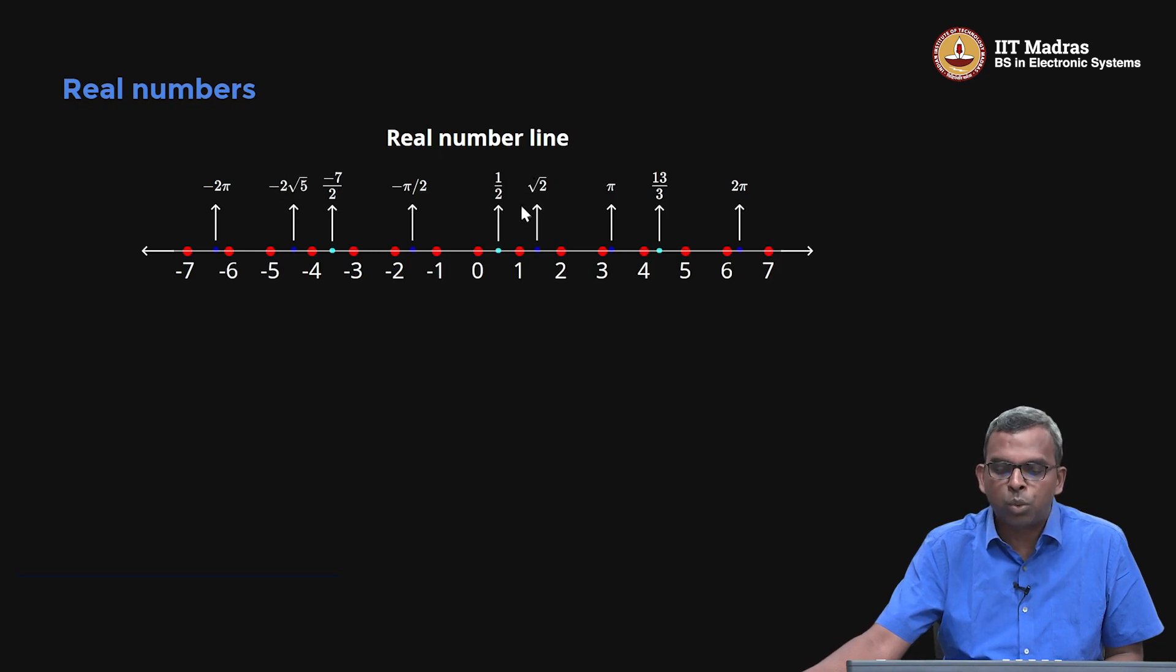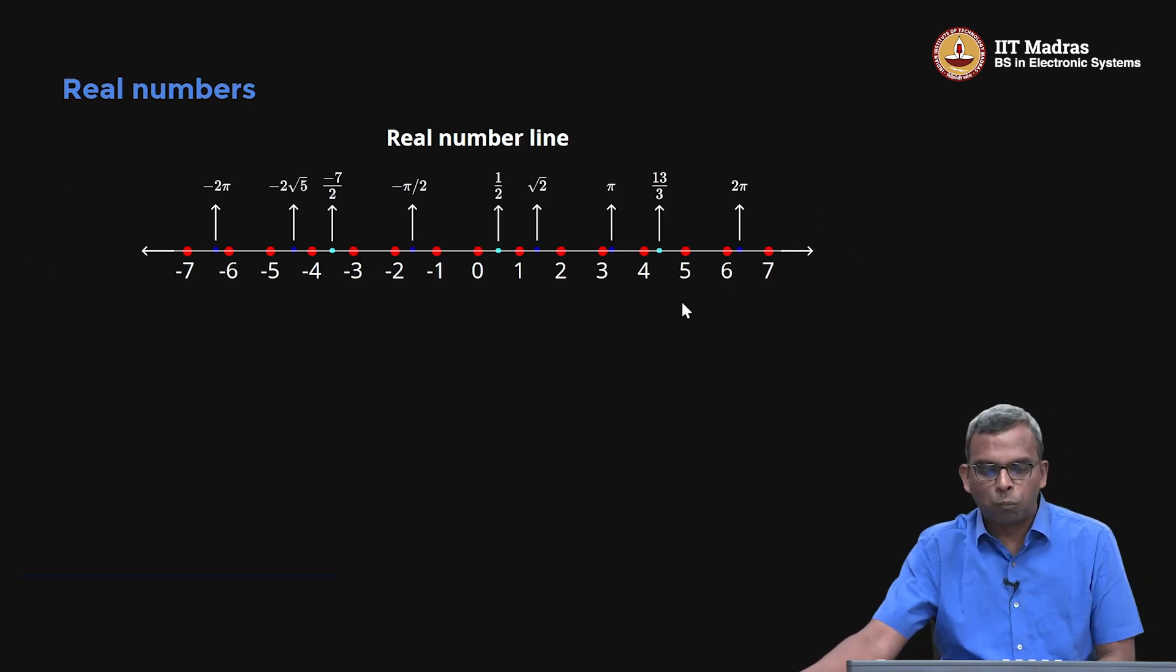I've shown here only square root, but you can have cube root, fifth root, tenth root, hundredth root, all of those things, and then numbers like pi and e. All of these show up in this real line. I hope you have good exposure to this real line.